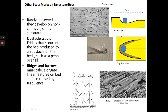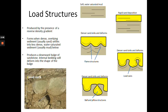Eddies scour into the bed, and the obstacle scour is produced by an obstacle on the bed — maybe a shell or a pebble. The deeper part tapers downstream. You can also get shallow scour in the form of ridges and furrows: millimeter-scale elongate linear features on the bed surface caused by turbulence, with flow moving in one direction producing scour and ridges in between.